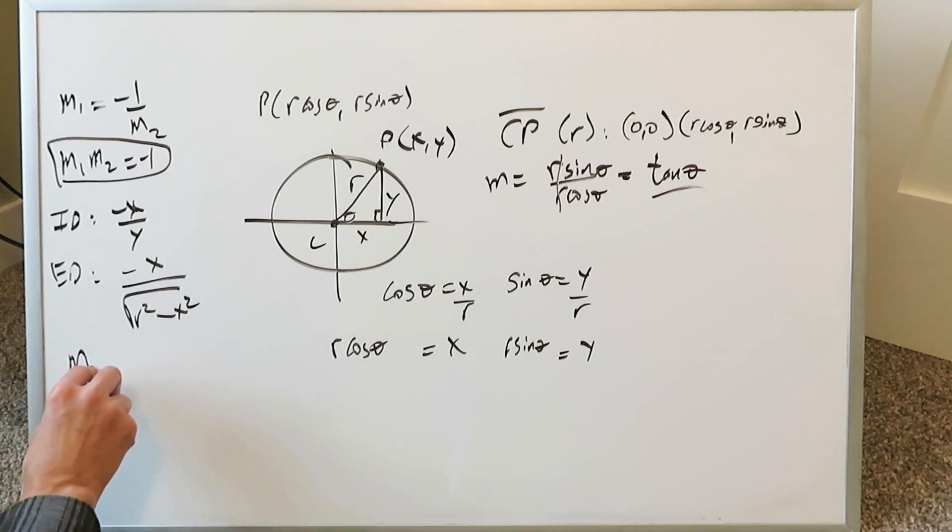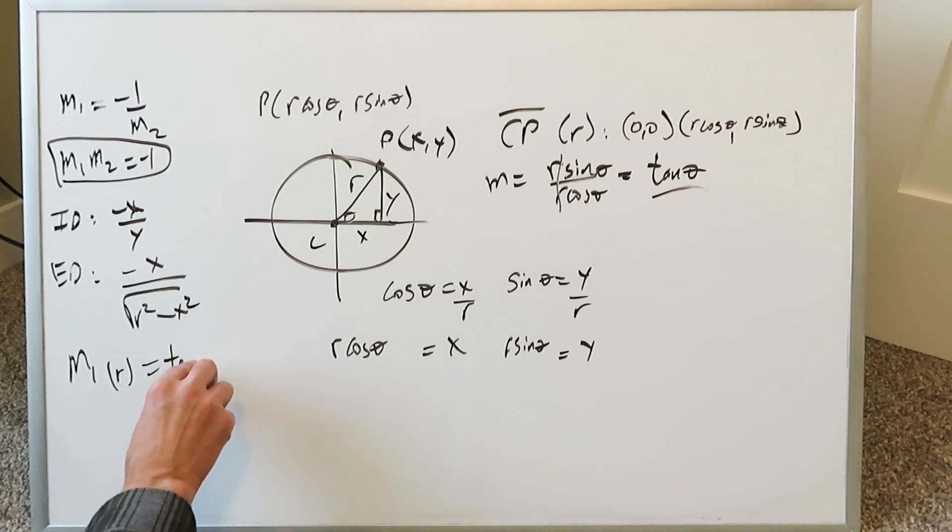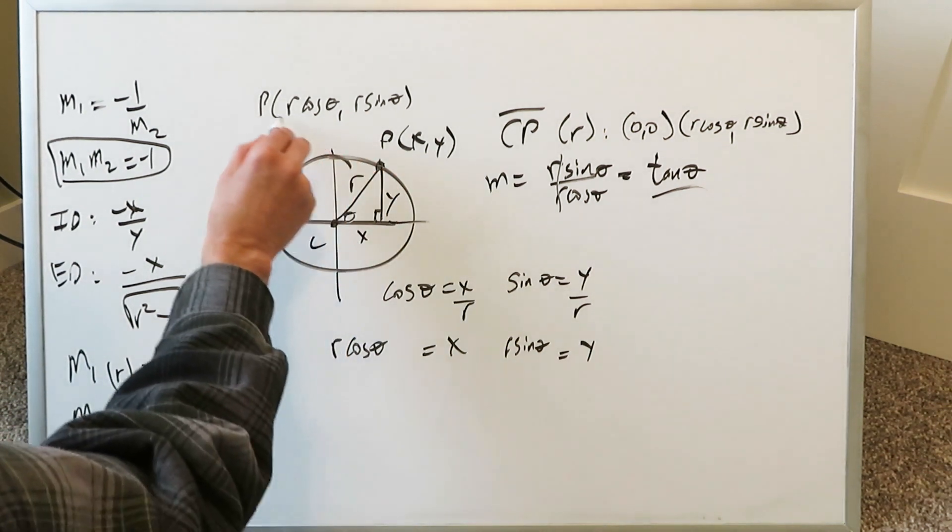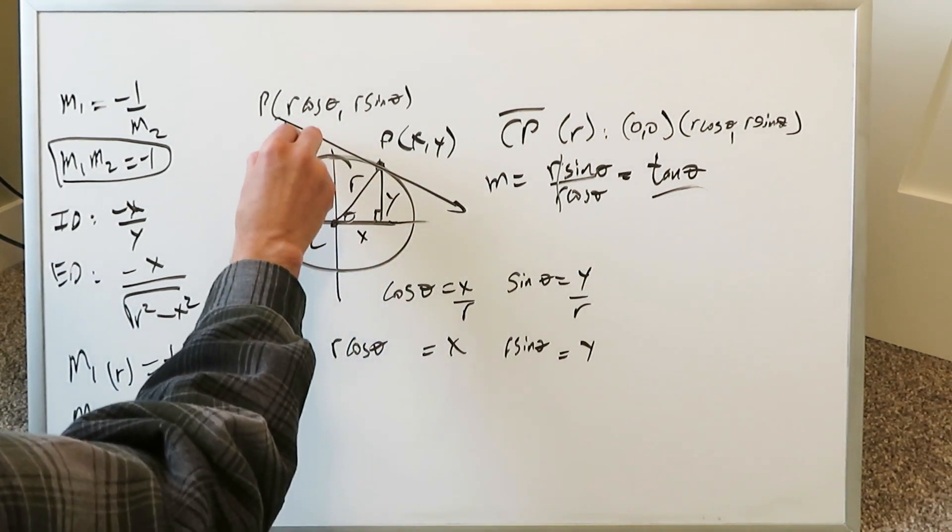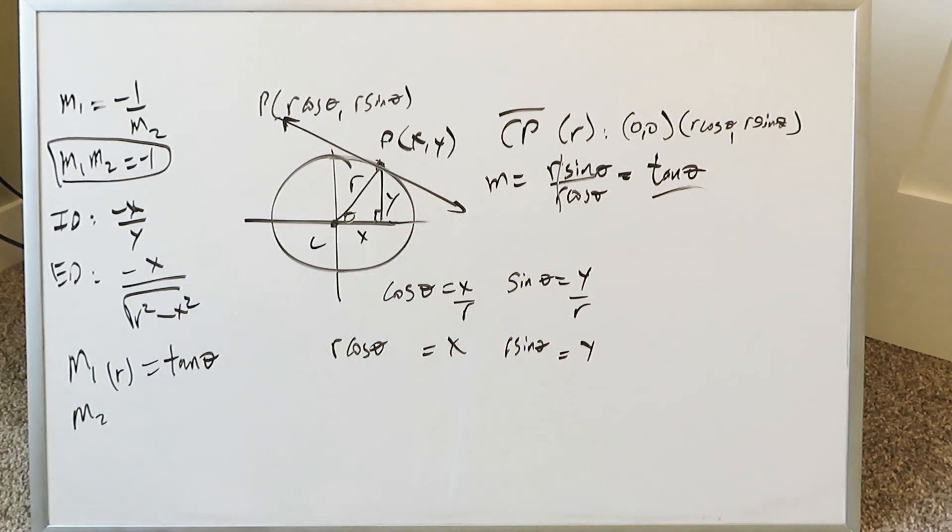Let the slope m1, being the slope of your radius, and I will put a little parentheses r, be here, exactly what you've determined, tan theta. We need to now determine m2, which is the slope of a tangent line. The tangent line will form right here, tangent to the circle at point p. We now have to find that slope for that line, and we'll write here m2 with a parentheses t for the tangent.